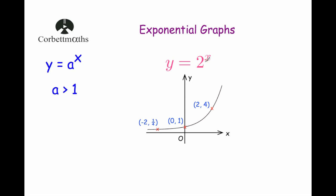On the left-hand side, whenever we have x values that are negative and decreasing, 2 to the power of negative 1 would be equal to a half, so it's going to get smaller. If we had 2 to the negative 2, that would be 1 over 2 squared, which is a quarter. As the values of x decrease, the values of y would get closer and closer to 0 but never quite reach it, so the x-axis would be an asymptote.